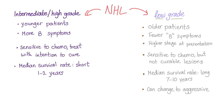Low-grade lymphoma patients are older, have fewer B symptoms, and present at a higher stage. They are sensitive to chemo but not curable by chemo. The median survival rate is long — seven to ten years. They can change or upgrade into aggressive non-Hodgkin's lymphoma.